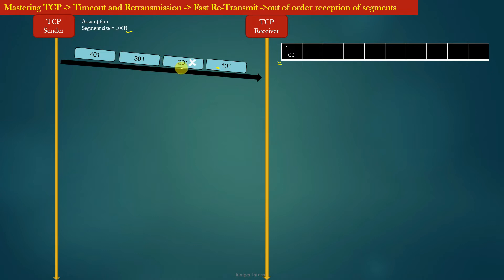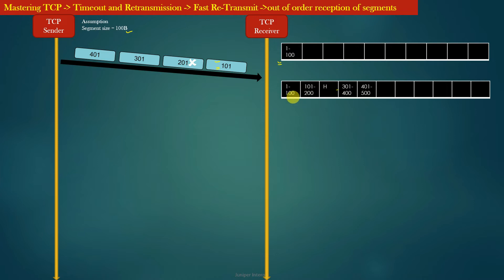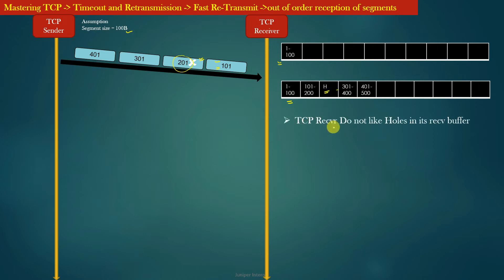Suppose that out of these four data segments, the segment with sequence number 201 gets lost in the network. This means the TCP receiver will receive segments 101, 301, and 401. As you can see, the TCP receiving buffer will have all bytes received from the TCP sender except bytes 201 to 300, creating a hole in the buffer. Remember, the TCP receiving buffer is a circular buffer where each slot corresponds to a byte.